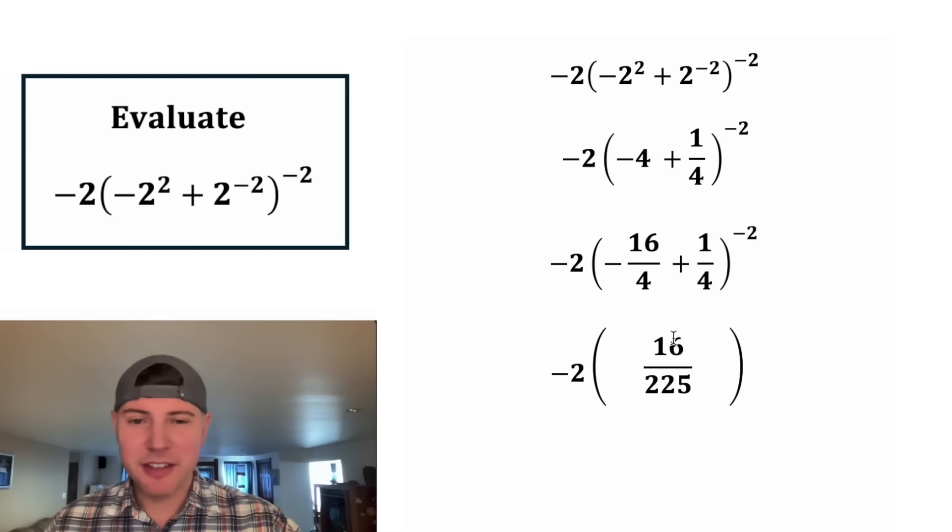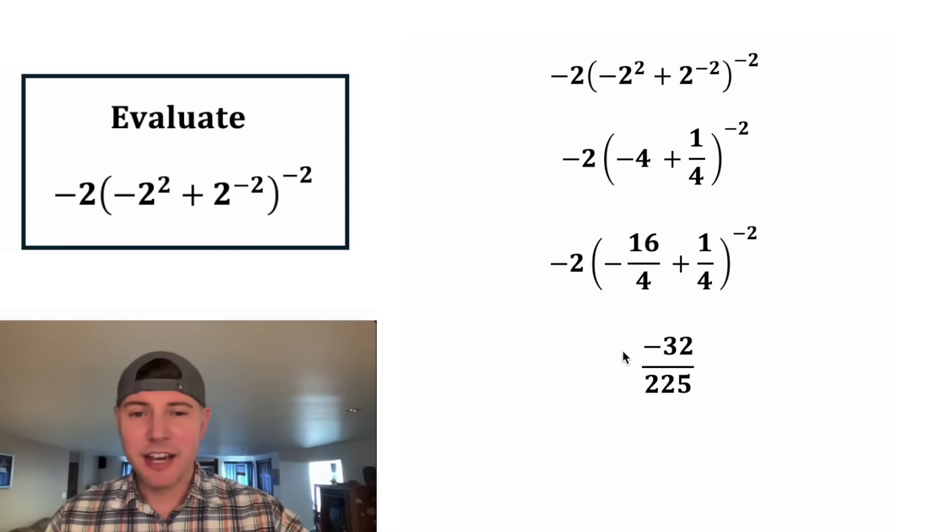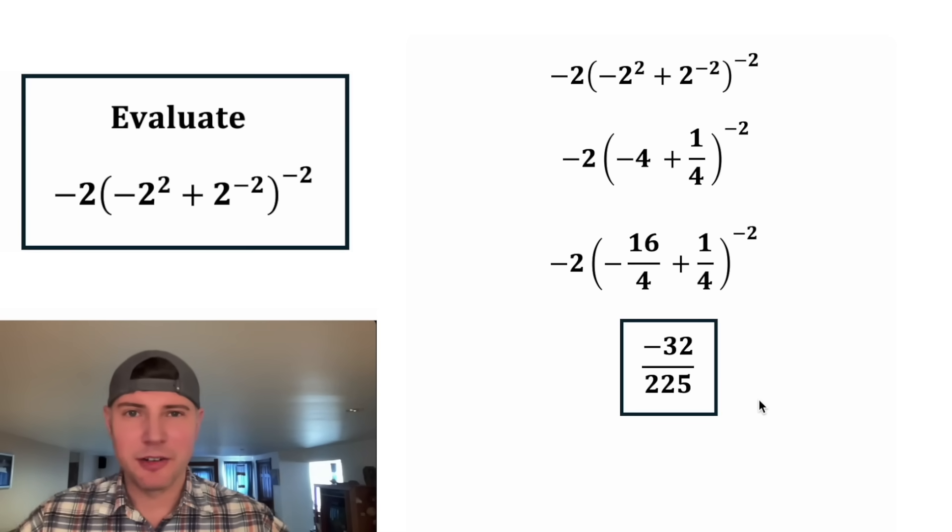Now we need to multiply this 16 over 225 times negative two. And negative two times 16 is negative 32. And this is the answer to our question. Let's put a box around it.